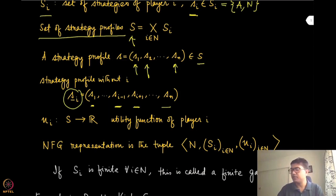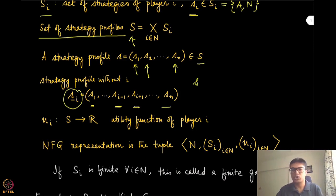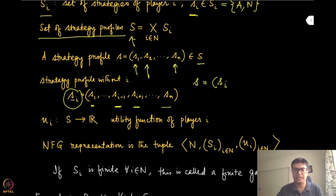So why does that help? We can write the whole strategy profile S in a much shorter notation: (s_i, s_{-i}), which is the strategy of player i and the strategy of all the other players. We will be using this notation very often in our course.